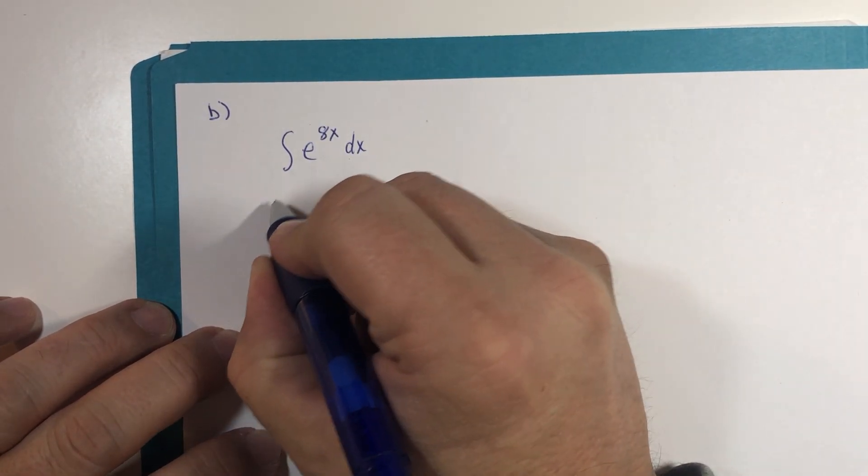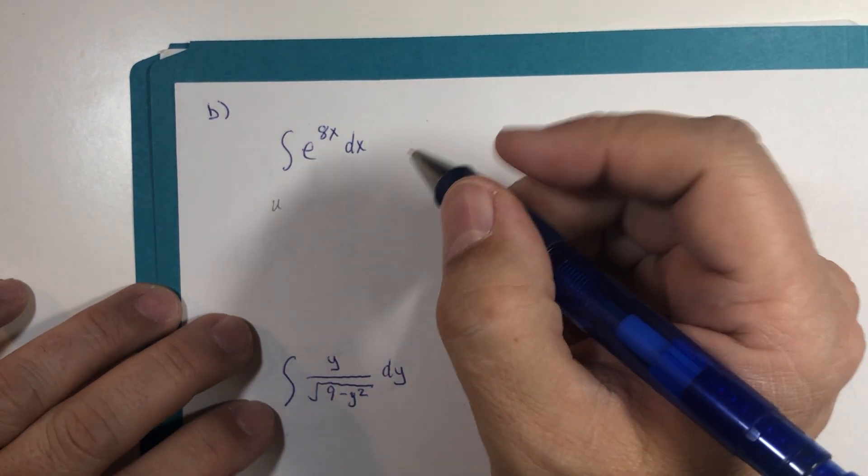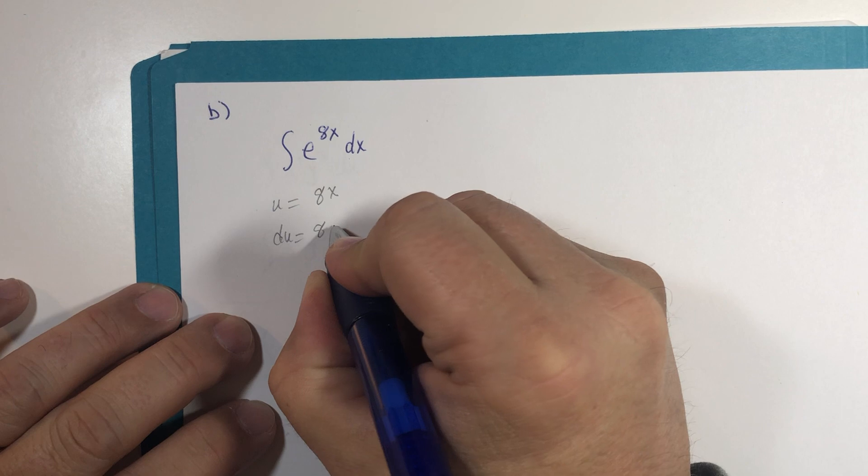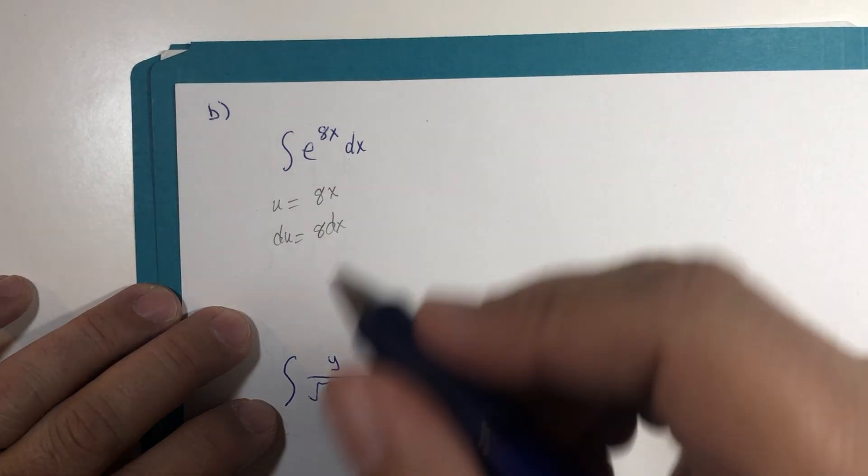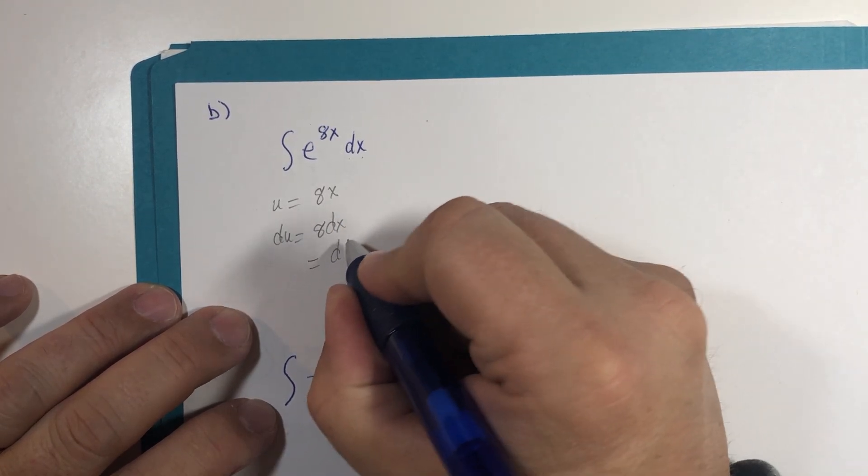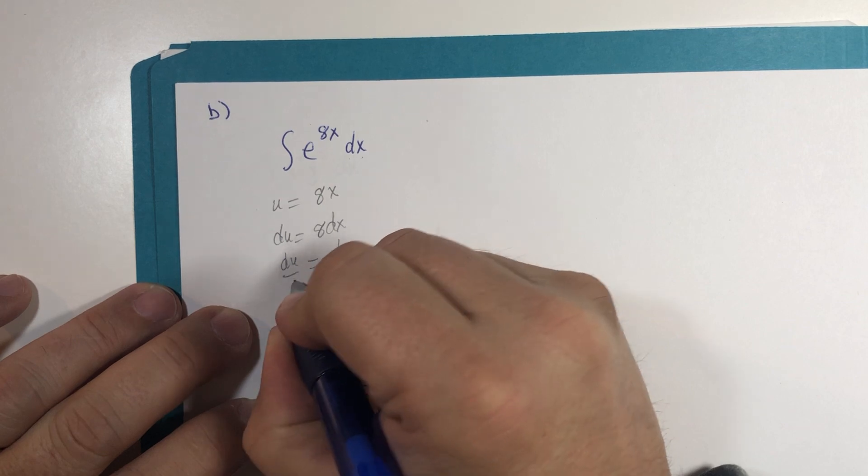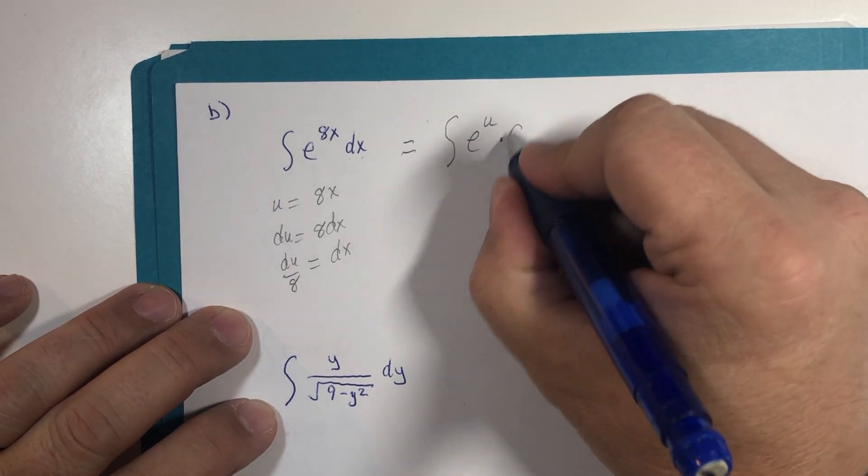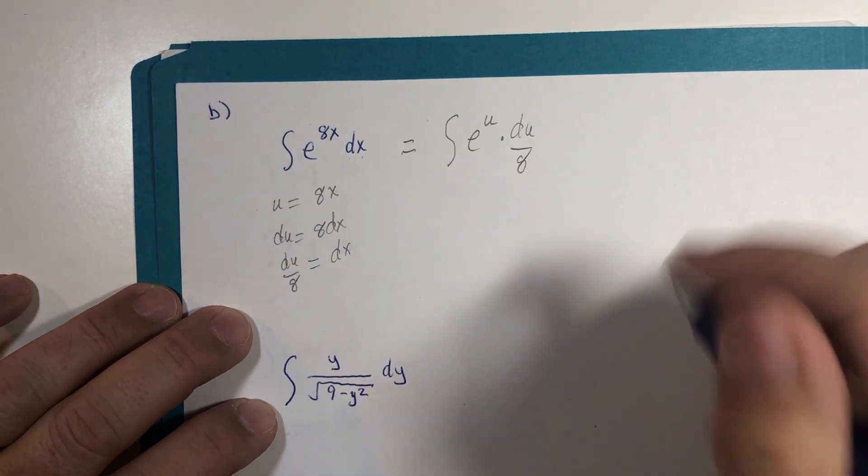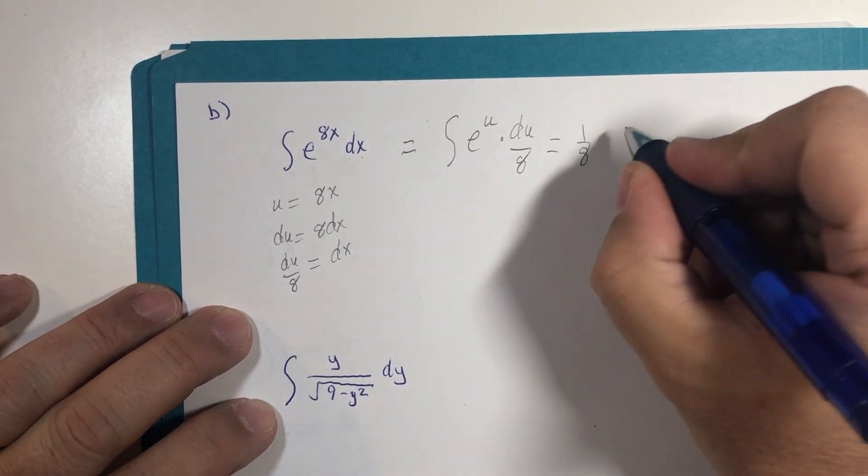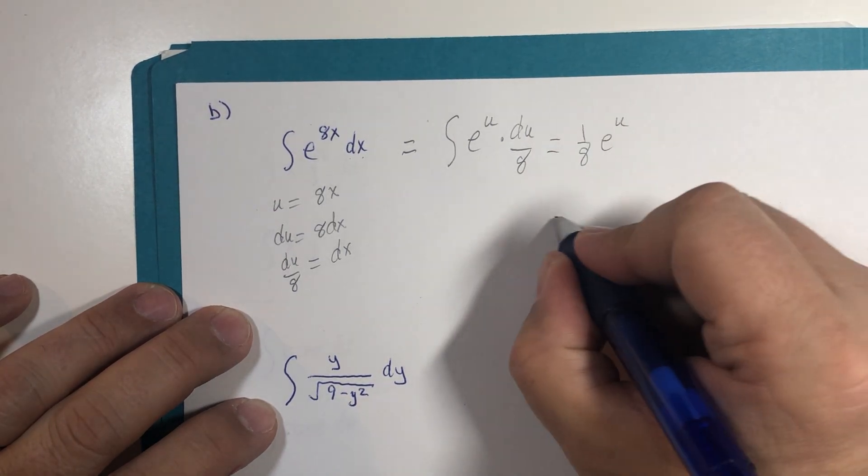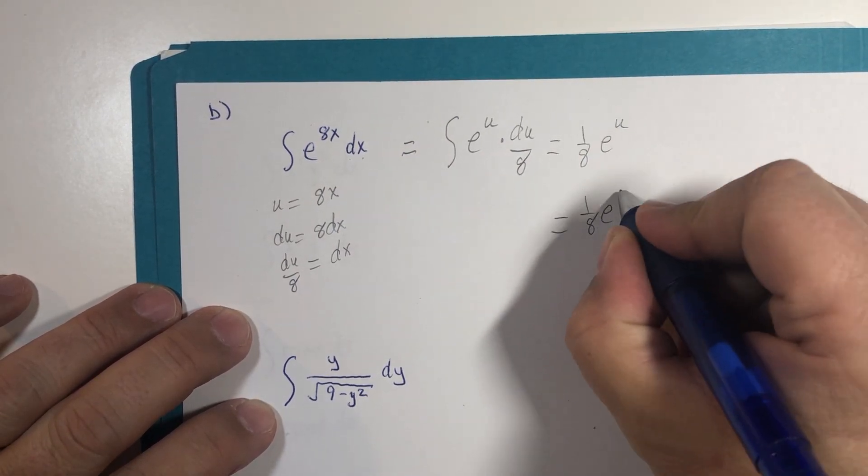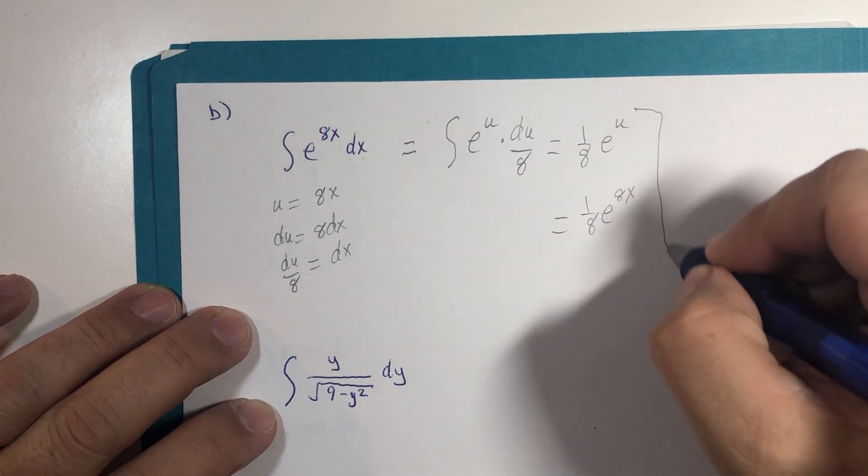If we use substitution, of which I already have some preparation on my Canvas page as well, if u is 8x then du is 8 dx. That's the differential du, and we have a dx here but we don't have an 8, so dx is equal to du divided by 8. This becomes e to the u multiplied by du divided by 8, and constants may be factored out of integrals, and the integral of e to the u is e to the u.